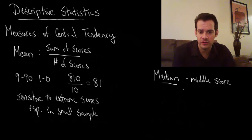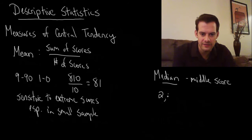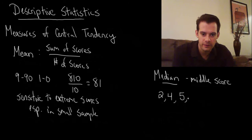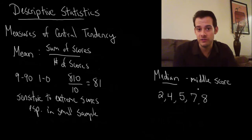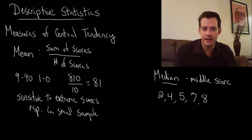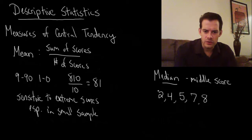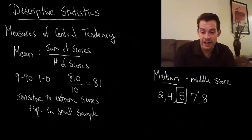Imagine I gave people some sort of test and they had scores: two, four, five, seven, eight. These are the scores for five people. We line them up and then look at which score is in the middle of the list — and it's five. So in this case the median would be five.